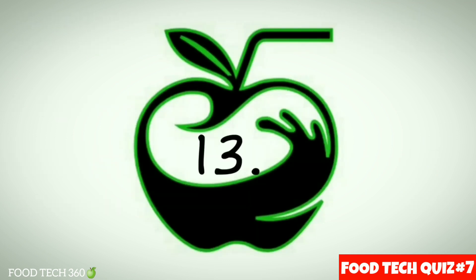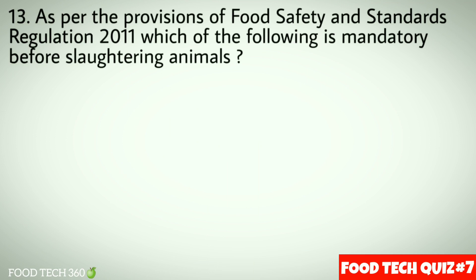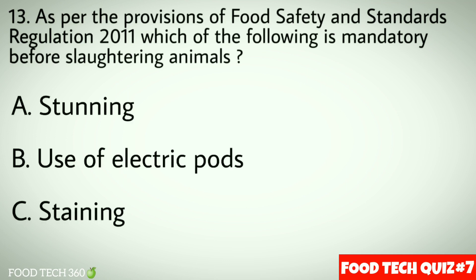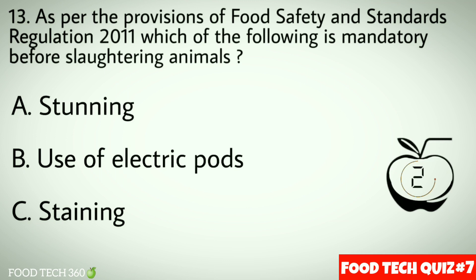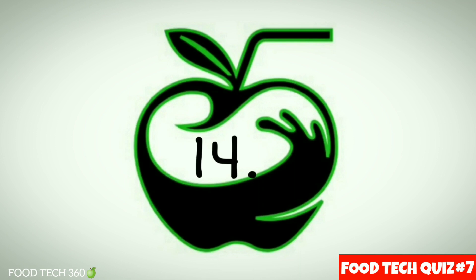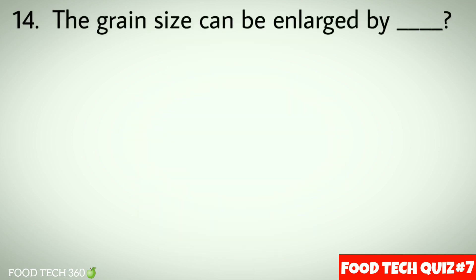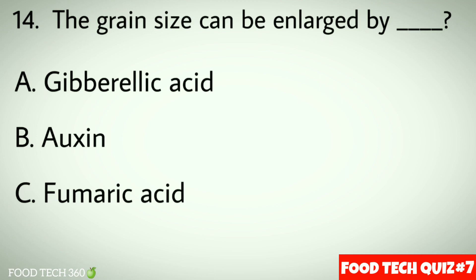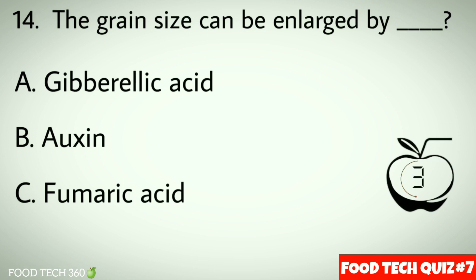Question number 13: As per the provisions of Food Safety and Standards Regulation 2011, each of the following is mandatory before slaughtering animals — options: a) Stunning, b) Use of electric prods, c) Staining. Correct answer: a) Stunning. Question number 14: The grain size can be enlarged by — options: a) Gibberellic acid, b) Auxin, c) Fumaric acid. Correct answer: a) Gibberellic acid.